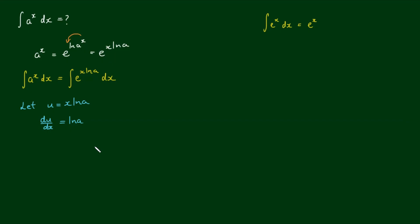Log of a being a constant, and if I swap the differentials around, I get du equals log of a by dx, and log of a can come down, so du on log of a is equal to dx.